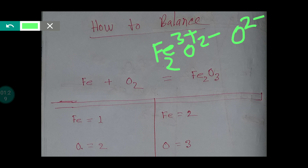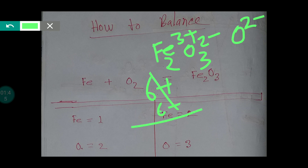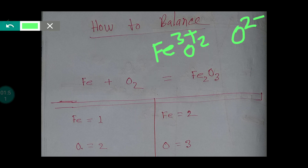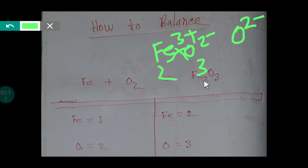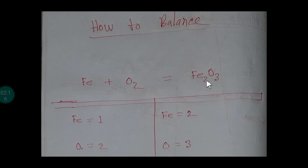Two iron gives 6+ and three oxygen (oxide) gives 6 minus, so they cancel each other out. There is also an important rule: you simply swap or cross the charges — the 3 charge comes to oxygen and the 2 charge comes to iron — giving you Fe₂O₃, ferric oxide. Now you know how to write the ferric oxide formula.